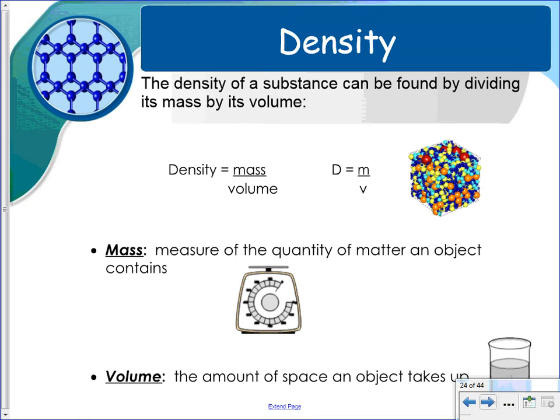The density of a substance can be found by dividing its mass by its volume. So here's the equation for density. Mass is a measure of the quantity of matter of an object, normally given in grams, or you could have it in kilograms, milligrams, centigrams.